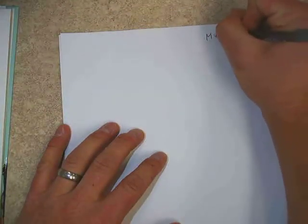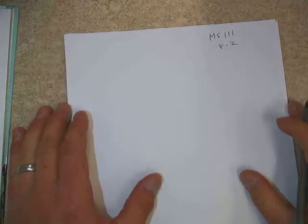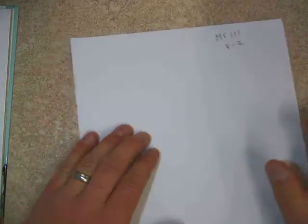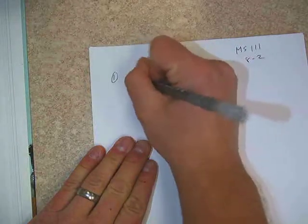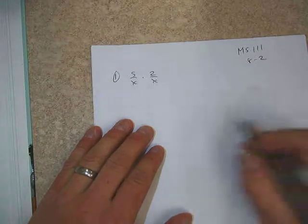Okay, in section 8-2, we are going to discuss dealing with rational functions in terms of multiplying and dividing them. If you find page 437 in your book, we're going to look at a couple of examples in terms of multiplying. The first one is number 1. We have 5 over x times 2 over x.